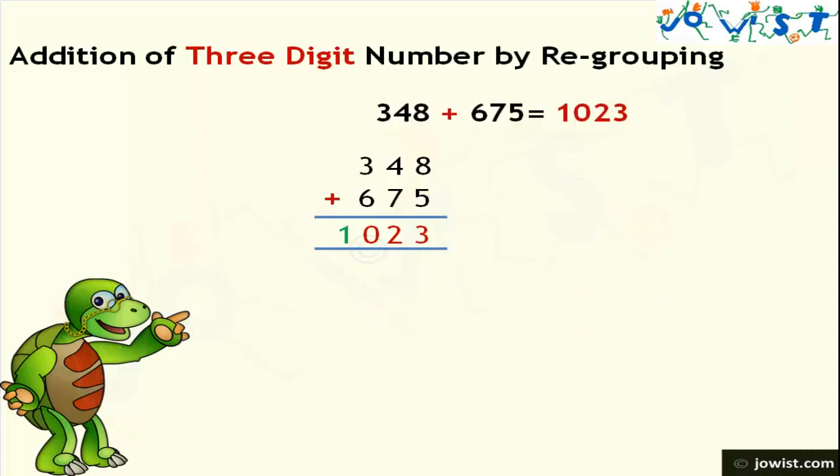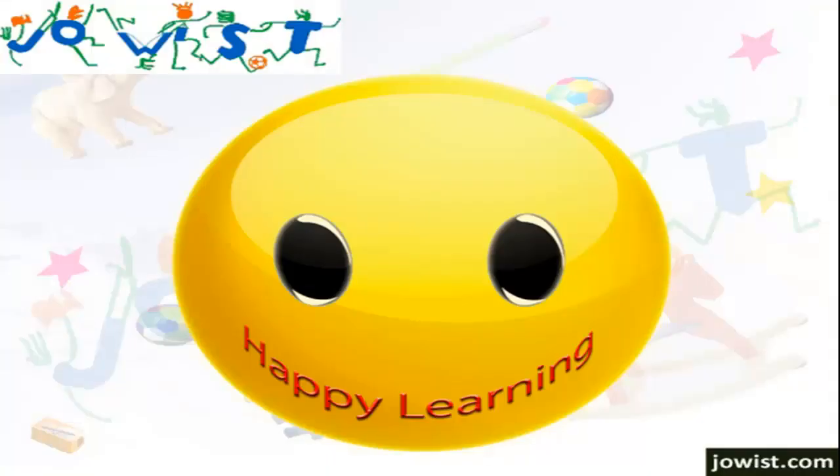Therefore when we add 348 and 675 we get a result of 1023. Happy learning!